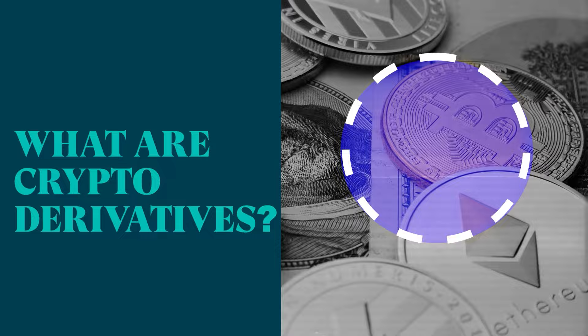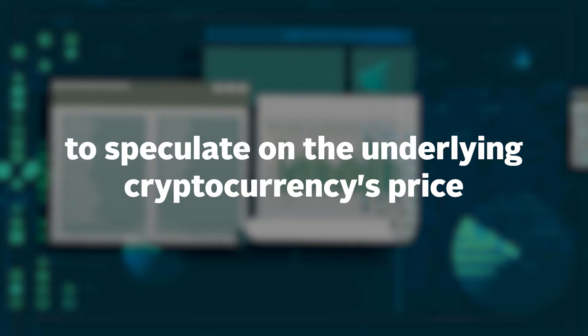So what are crypto derivatives? The word derivative implies that it is derived from something. So in financial terms, derivatives are instruments that derive their value from an underlying asset. Crypto derivatives, therefore, derive their value from cryptocurrencies. They exist as financial contracts that two parties enter into to speculate on the underlying cryptocurrency's price on a future date.